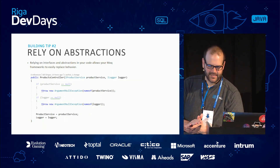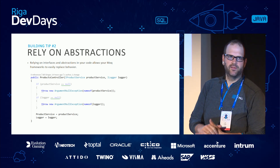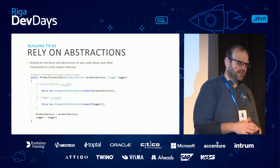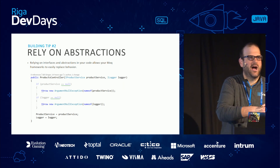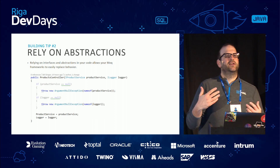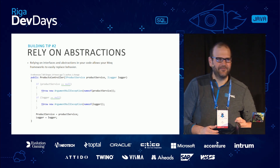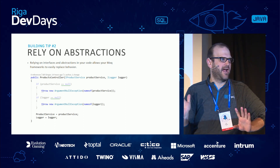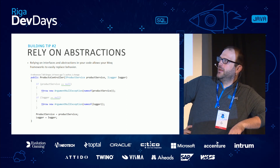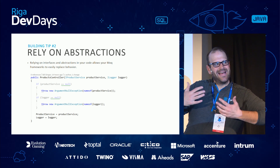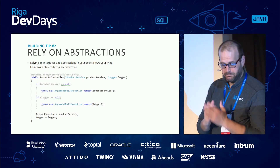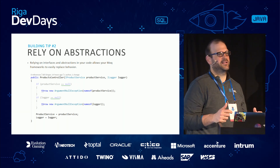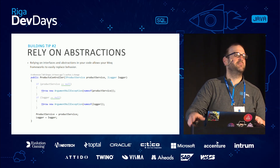Building tip number two: rely on abstractions. Microsoft has made this pretty obvious in the framework, especially with .NET Core. You want to rely on interfaces, or if you can't use interfaces, rely on abstract classes. You do not want to inject the actual concrete implementation. .NET is a strongly typed language — for me to supply a mock I have to give the class something, and if I have a hard-coded class I can't arbitrarily swap it out. With an abstraction, I can supply any class that implements that interface, which lets me mock the behavior.